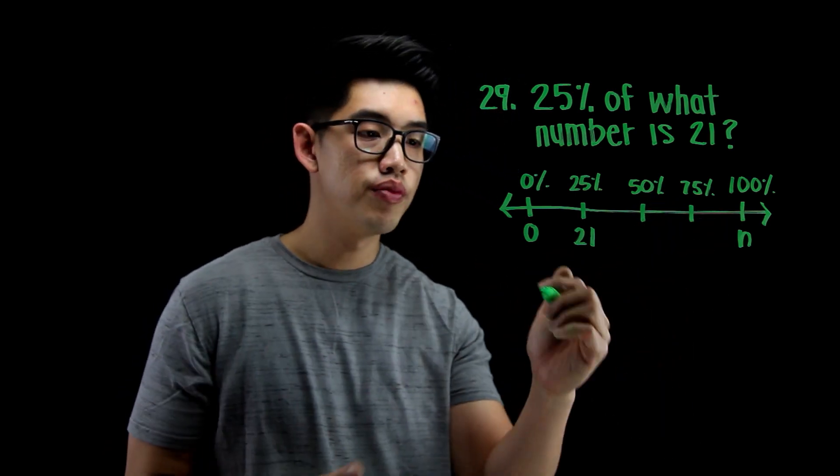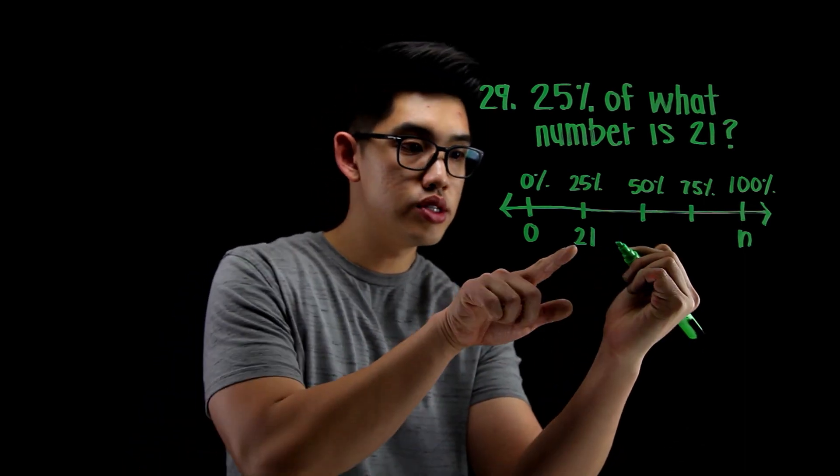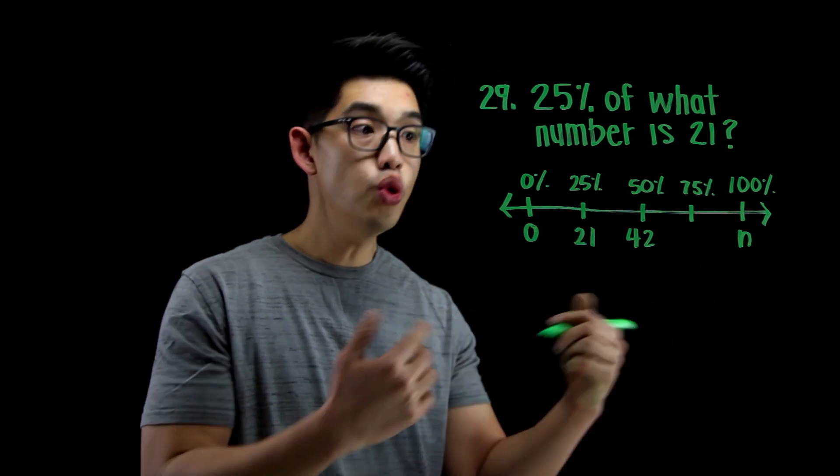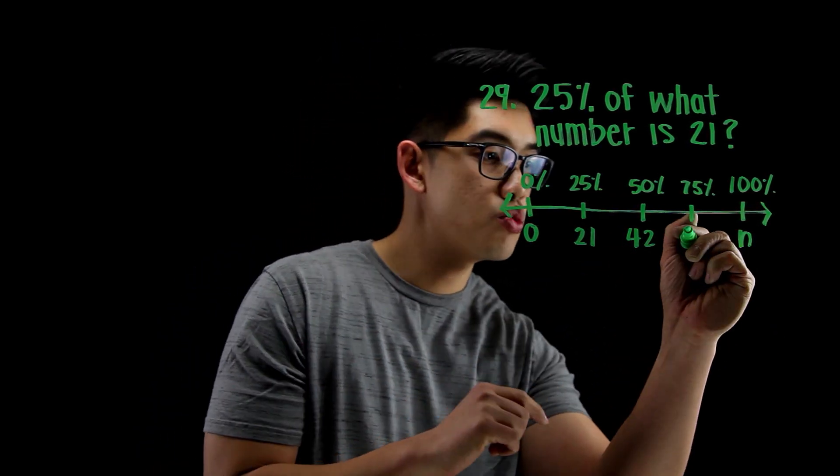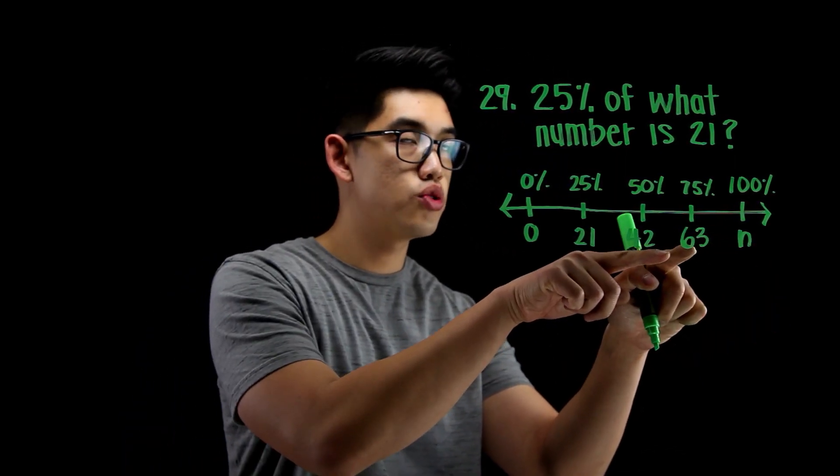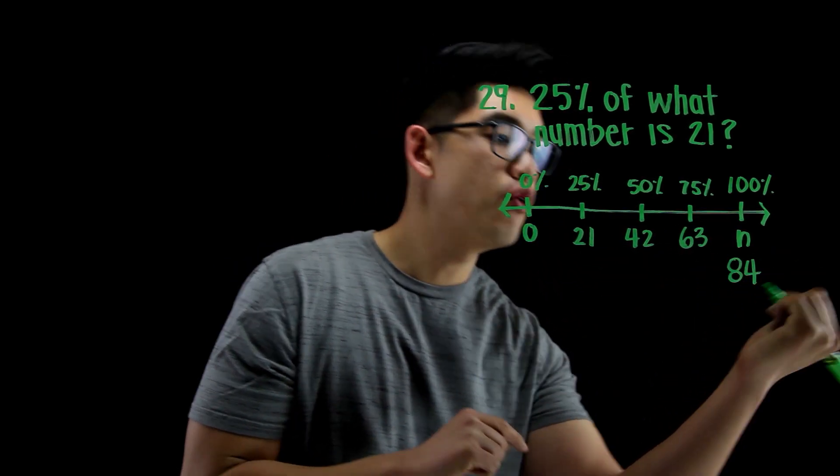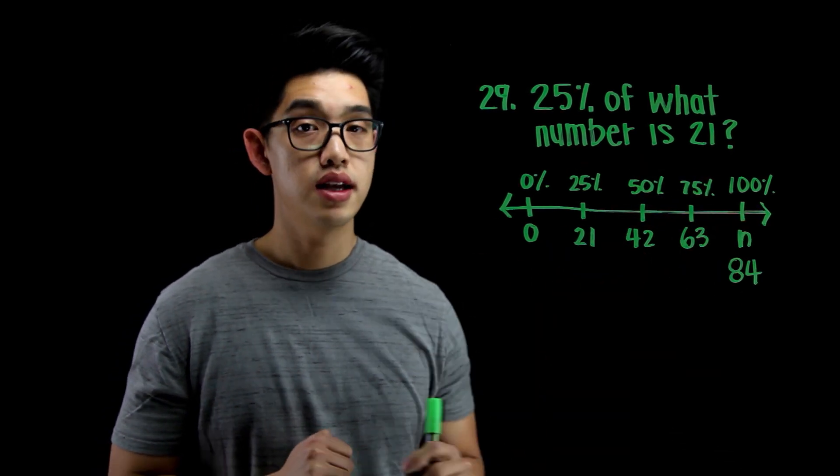You see how 0 became 21? I can add another 21. So 21 plus 21, that's going to be 42 or 50%. I can add another 21 to that, that's going to be 63. And then I can add another 21 to this. 63 plus 21, that's going to be 84. So my answer for 100%, that's 84.